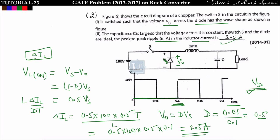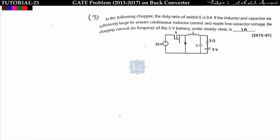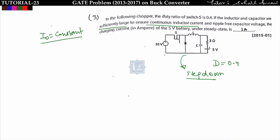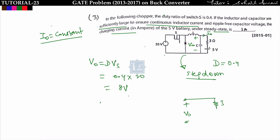Delta IL equals 2.5 ampere. This was asked in Gate 2014 Set A. The next problem: in a chopper with duty ratio D = 0.4, this is a step-down chopper. The inductor and capacitor are sufficiently large to ensure continuous inductor current and ripple-free capacitor voltage. The charging current of the 5-volt battery under steady state is to be found. Output voltage V0 = D × Vs = 0.4 × 20 = 8 volt.